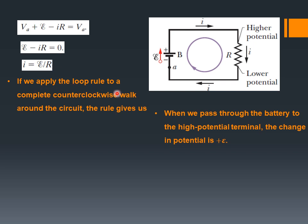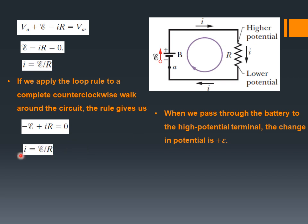If we apply the loop rule going counter-clockwise around the circuit, the rules give us negative EMF plus IR equals zero — but in both cases I equals EMF over R. It doesn't depend on which direction you travel. Whether you start from point A going clockwise or counter-clockwise, you get I equals EMF over R.